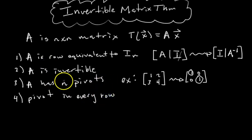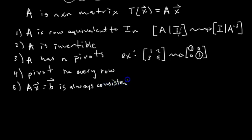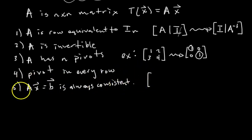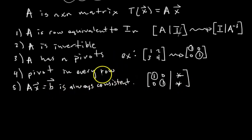If there's a pivot in every row, then Ax = b is always consistent. If we can row reduce A to the identity matrix, it doesn't matter what we have on the right-hand side — if there's a pivot in every row, it's impossible to have a pivot in the augmented column, so it's impossible for the system to be inconsistent. Therefore, since there's a pivot in every row, Ax = b is always consistent.